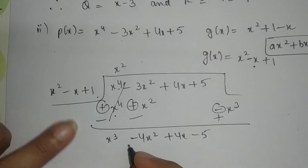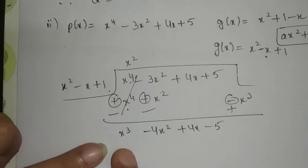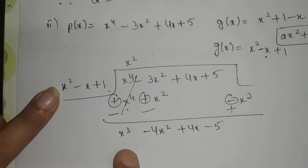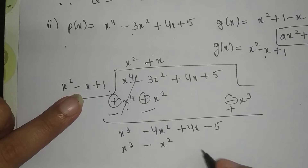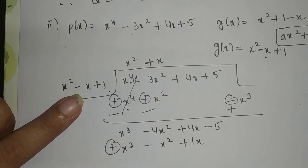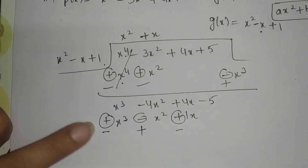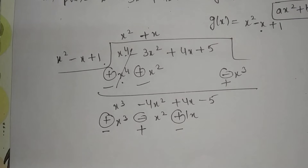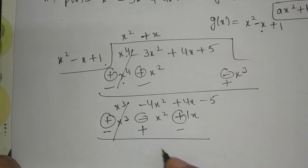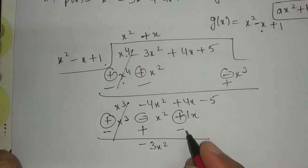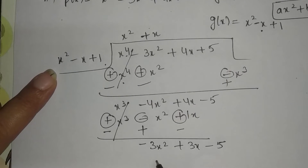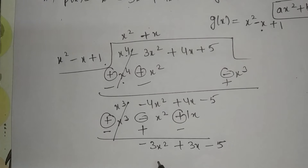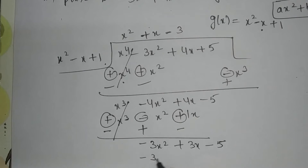We bring the greater power term forward first. Now, x raised to power 2 multiplied by what gives x raised to power 3? Multiplied by x. So x raised to power 3. Minus x and plus x gives minus x squared, and 1 into x gives plus x. Next step: sign change — if it is plus, make it minus; if minus, make it plus. One plus and one minus cancel. Minus 4 and plus 1 gives minus 3x squared; minus 1x gives plus 3x minus 5. Next step: x squared multiplied by what gives minus 3x squared? We need minus 3, so minus 3x squared comes.